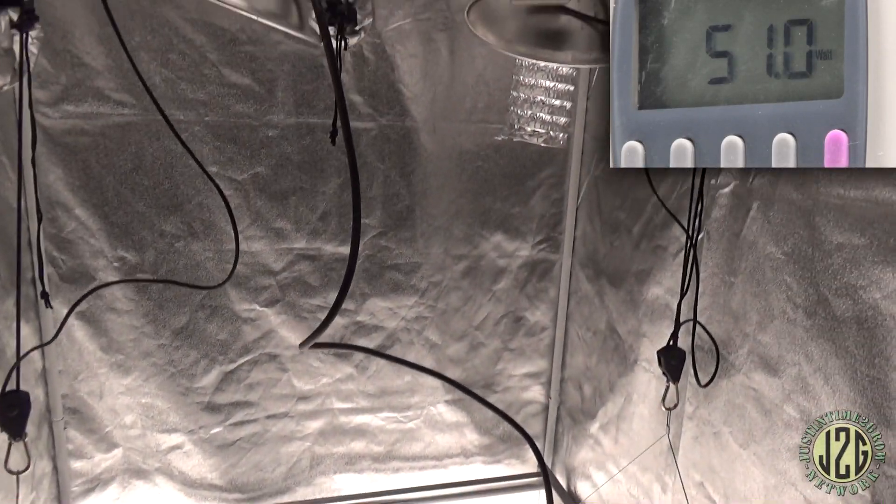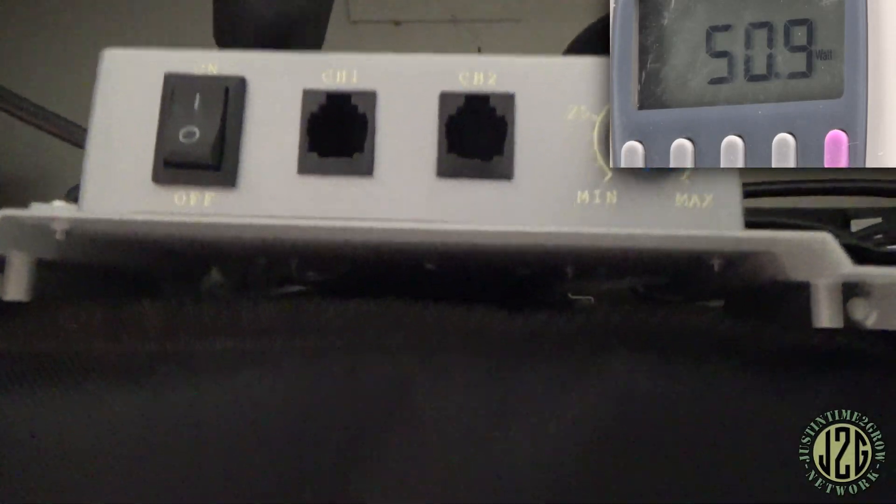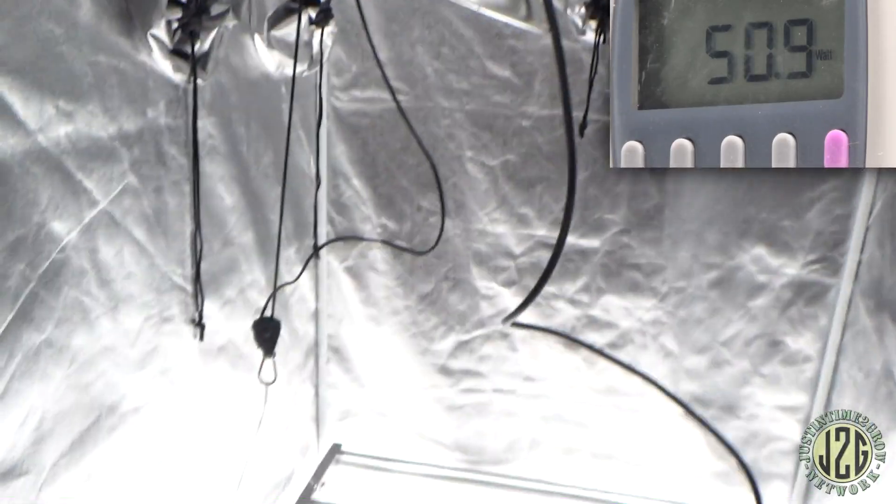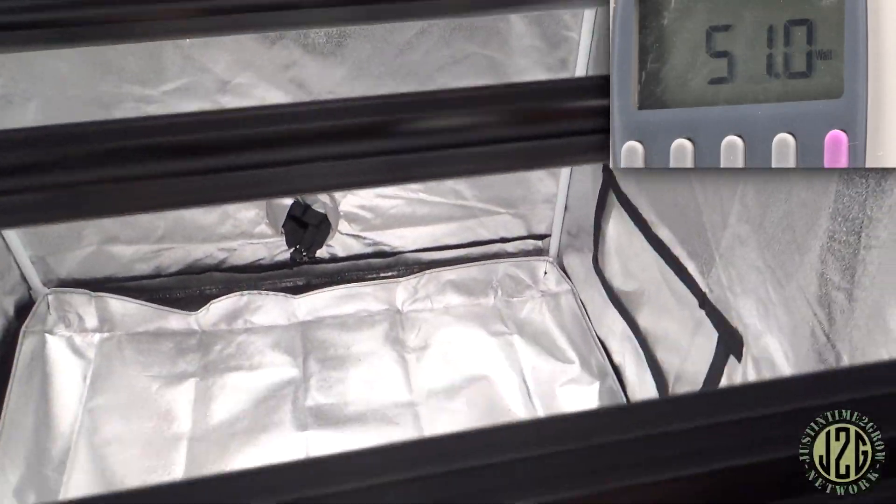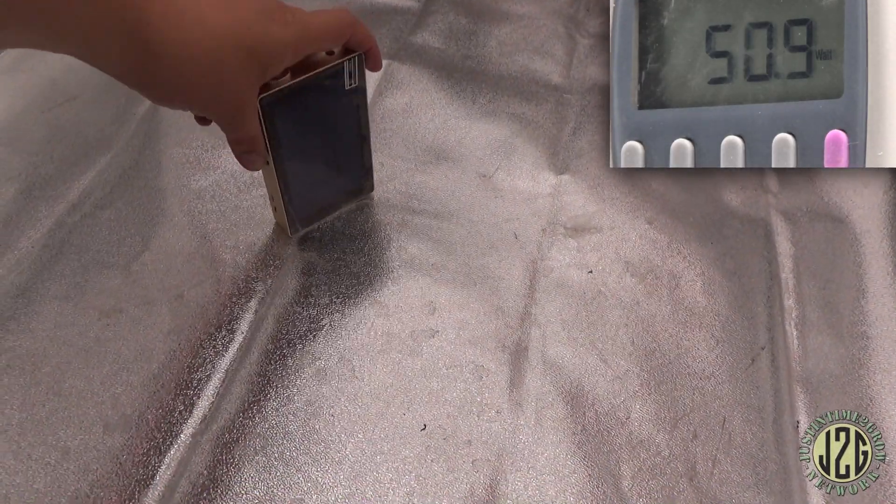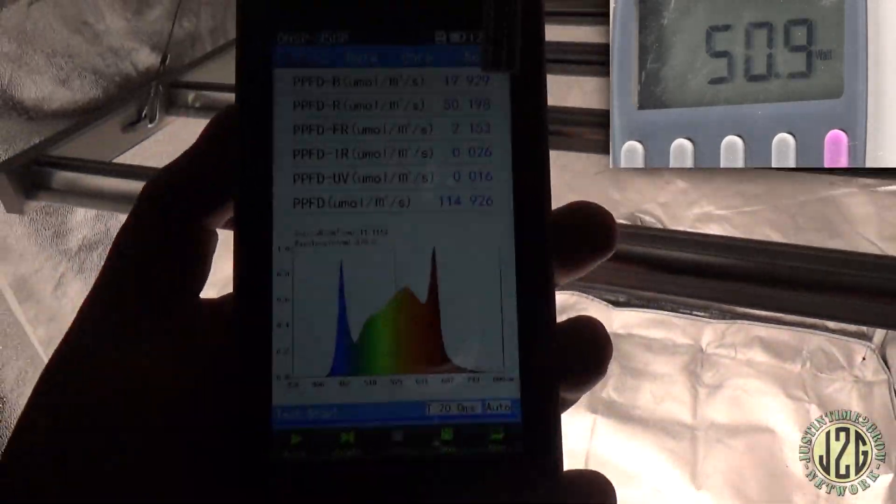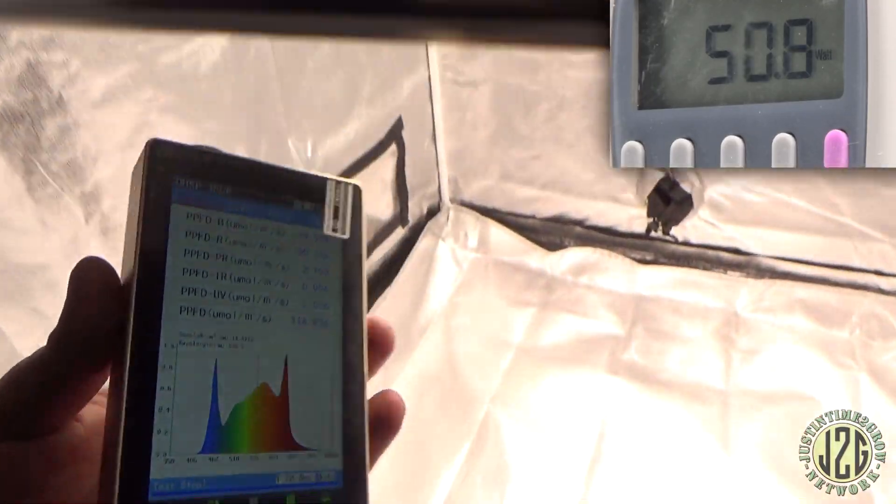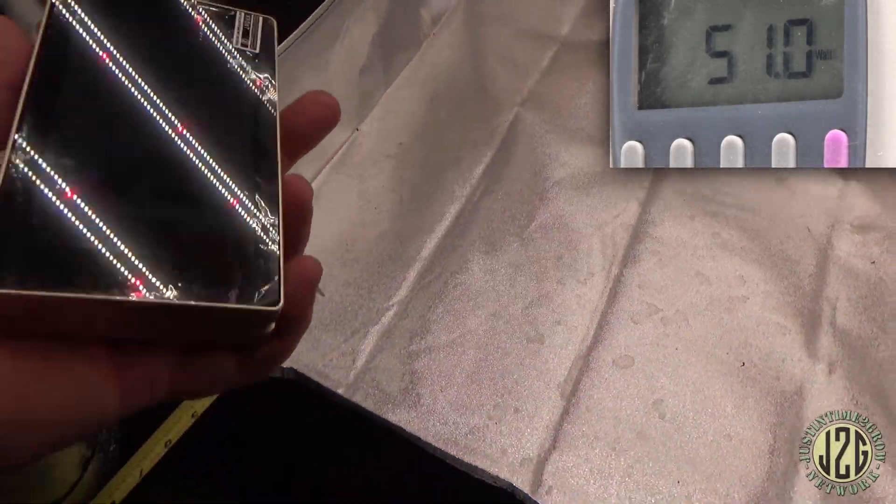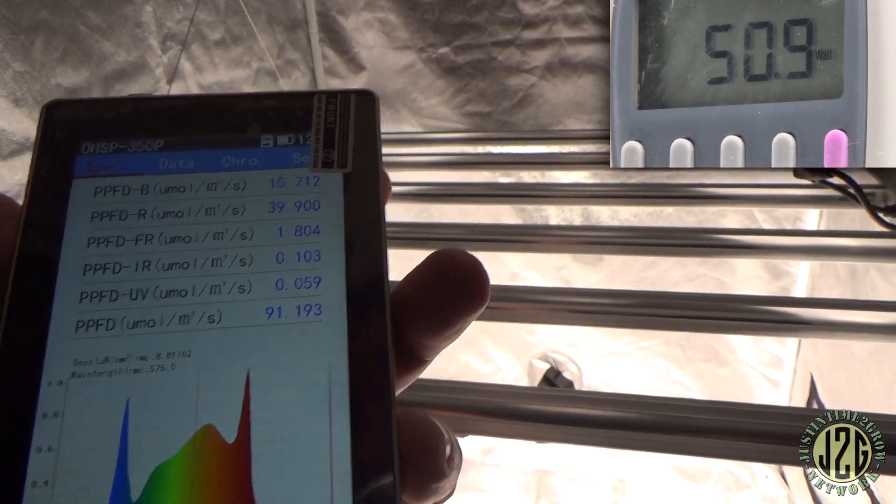We've got the watt meter hooked up, it's ready to go. We are dimmed down to the minimum, bare minimum. Looks like it's pushing 51 watts, something like that. Not too bad. Let's take a look and see what we're pushing for PAR here to the middle. 114, not too bad. To the side here, 91. So it does not drop off very much. So this is a little bit low for seedlings.